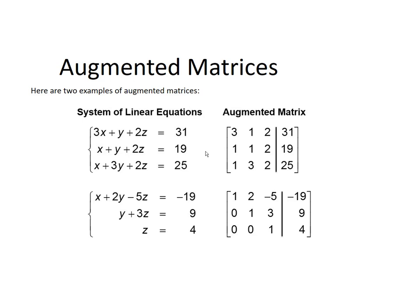Here are two examples of augmented matrices. We have a system of equations that is 3x plus y plus 2z equals 31. Second equation, x plus y plus 2z equals 19. And our third equation, x plus 3y plus 2z equals 25.